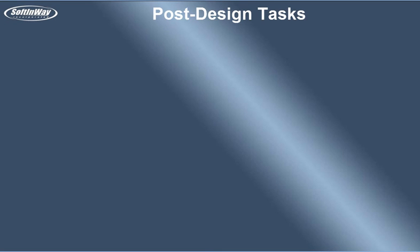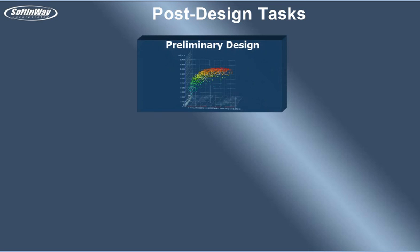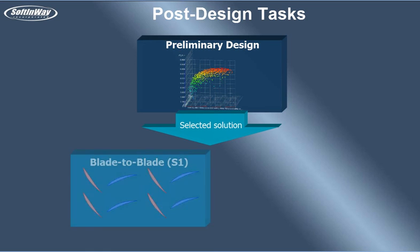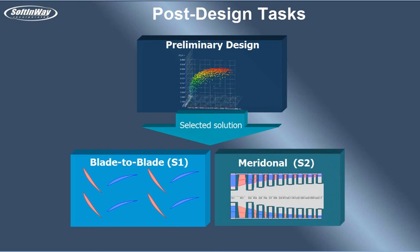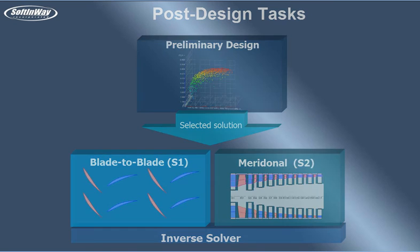Post design is an optional step after preliminary design. In contrast to preliminary design, which deals with a set of solutions, post design works with a single design selected during the preliminary design phase. Post design tasks allow the user to adjust the flow path on either the blade-to-blade S1 surface or the meridional S2 surface. Both of these tasks run under control of the inverse solver, meaning that mass flow rate is preserved while other parameters are changed.